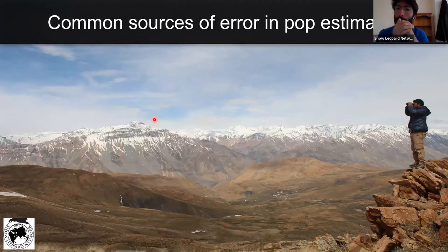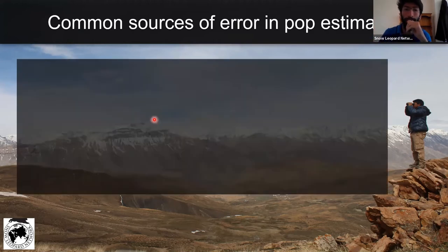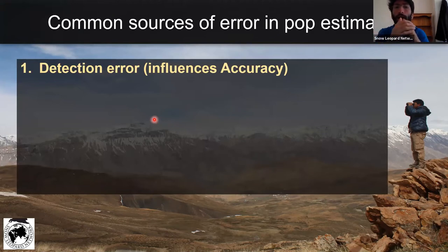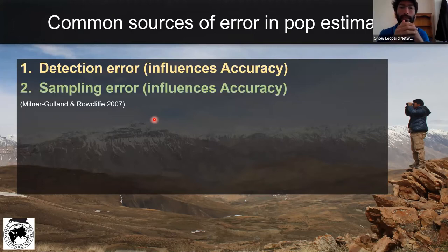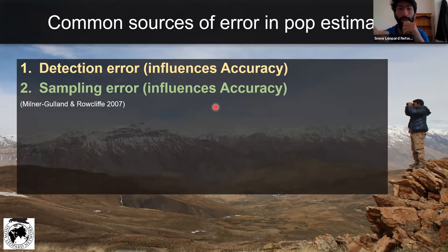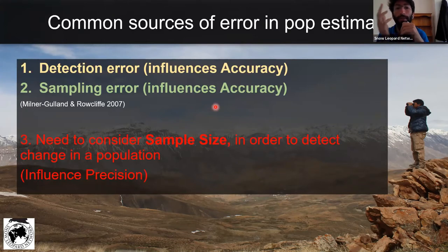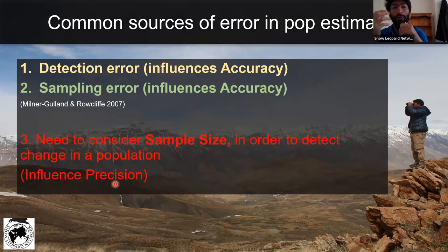But at the same time, there are some common sources of error in population estimates, especially for mountain ungulates. There's detection error — everything to do with detecting your species of interest. Then there is sampling error, which is to do with your sampling strategy. Both of these things influence the accuracy of the data. We also need to consider sample size in order to detect changes in population, which influences precision. These two types of errors are not necessarily always mutually exclusive.